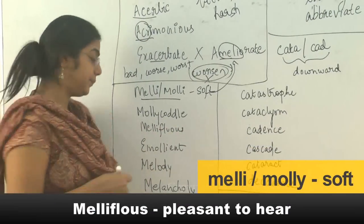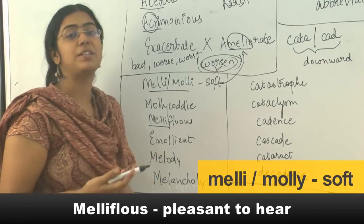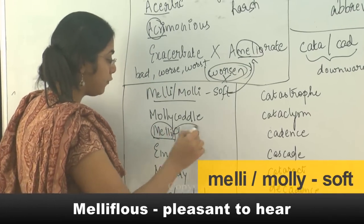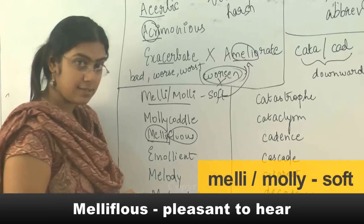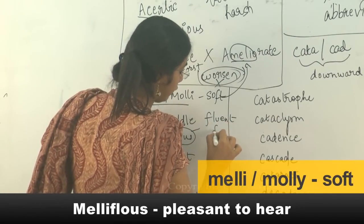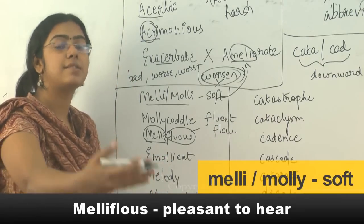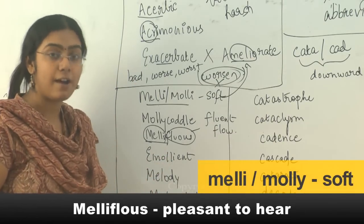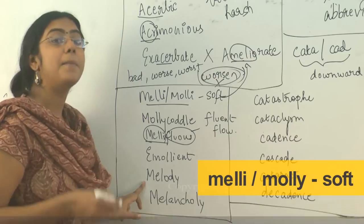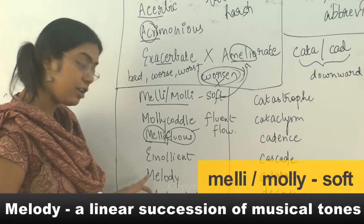Mellifluous music is very soft music. 'Melly' is soft, and 'fluous' has to do with flow — like fluent. So something that flows softly is mellifluous. From that you also get melody — we all know what a melody is.